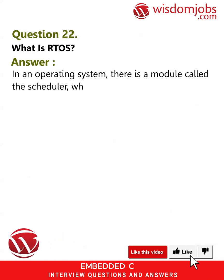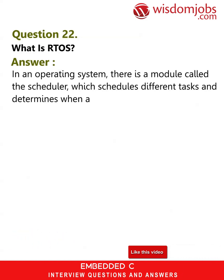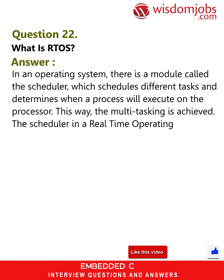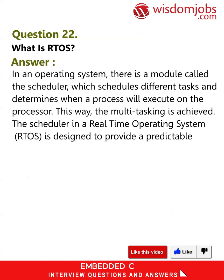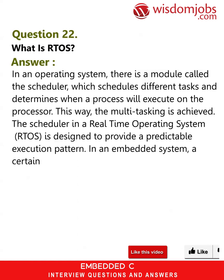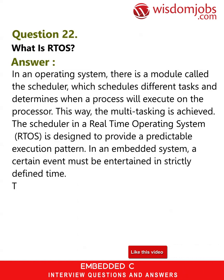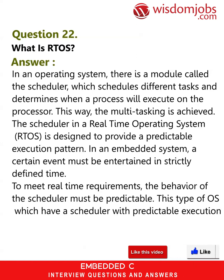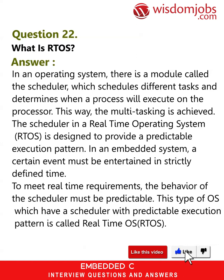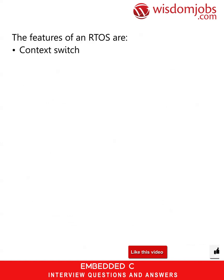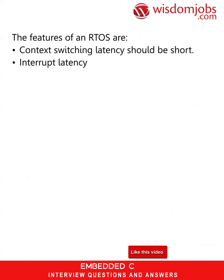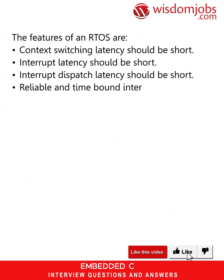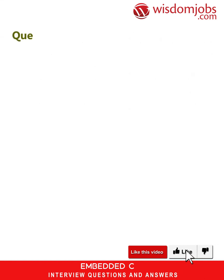Question 22: What is RTOS? Answer: In an operating system, a scheduler schedules different tasks and determines when a process will execute on the processor, achieving multitasking. The scheduler in a Real-Time Operating System (RTOS) is designed to provide a predictable execution pattern. In an embedded system, certain events must be handled within strictly defined time to meet real-time requirements. The features of an RTOS include: short context switching latency, short interrupt latency, short interrupt dispatch latency, reliable and time-bound inter-process mechanisms, and support for kernel preemption.